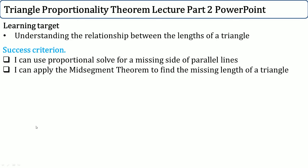Welcome to the Triangle Proportionality Theorem Lecture Part 2. The learning target is the same as the first one, to understand the relationship between the length of a triangle. The success criteria, the two new ones, is to use proportions to solve for a missing side of parallel lines and also apply the midsegment theorem to find the missing length of a triangle.